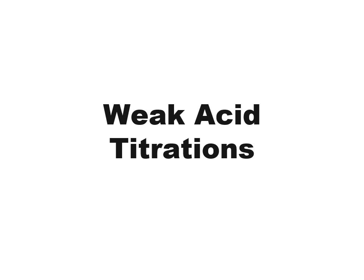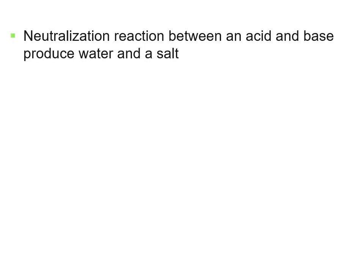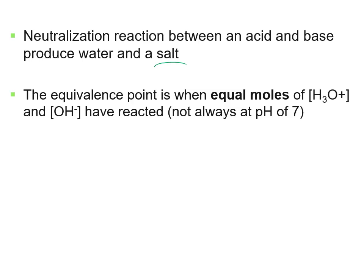Weak acid titrations. Neutralization reactions occur when an acid and a base react to produce water and often a salt. The equivalence point is when an equal amount of hydrogen ions — or hydronium ions when attached to water — and hydroxide ions have reacted. This isn't necessarily at a pH of 7, and we're going to look at why that is with a weak acid titration.